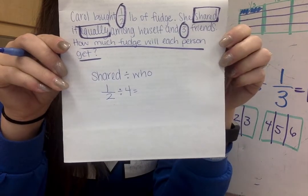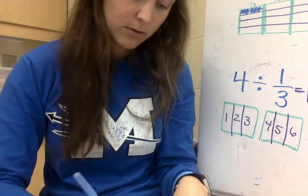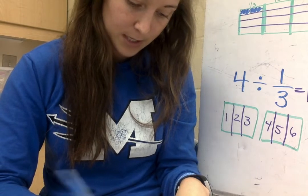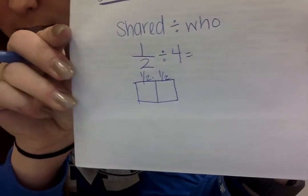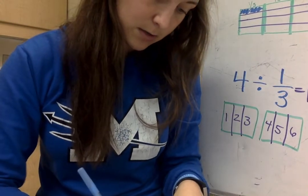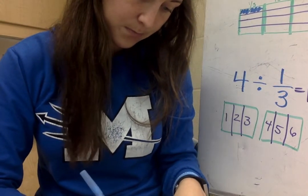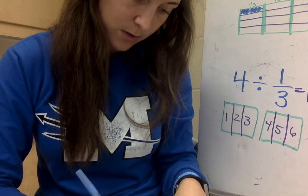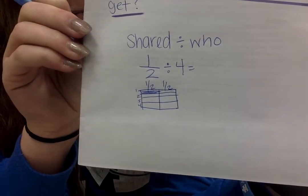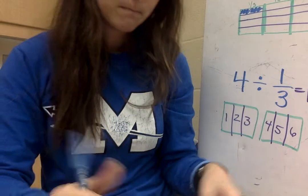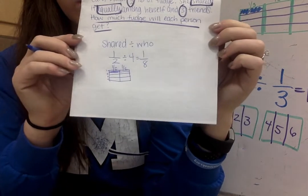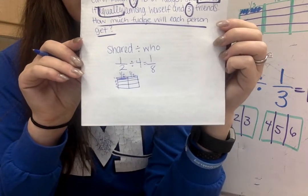To solve this, I'll draw a rectangle split into one half and represent it. Then I take my one half and break it into four pieces. I'll shade in one of those pieces. What does that one shaded piece represent? It represents one eighth. The answer to this problem is one eighth.